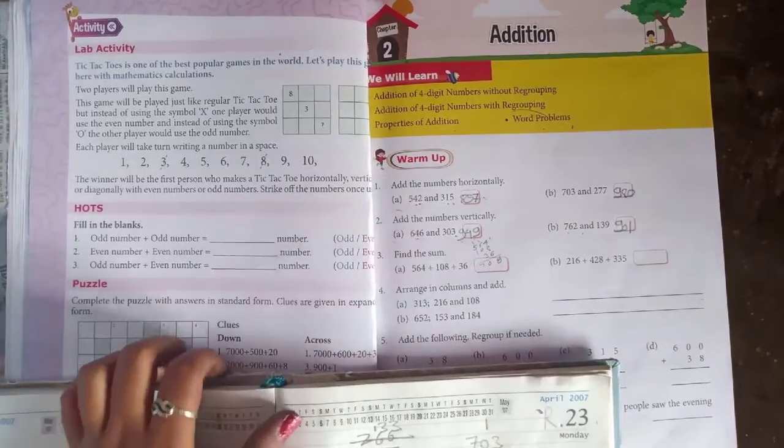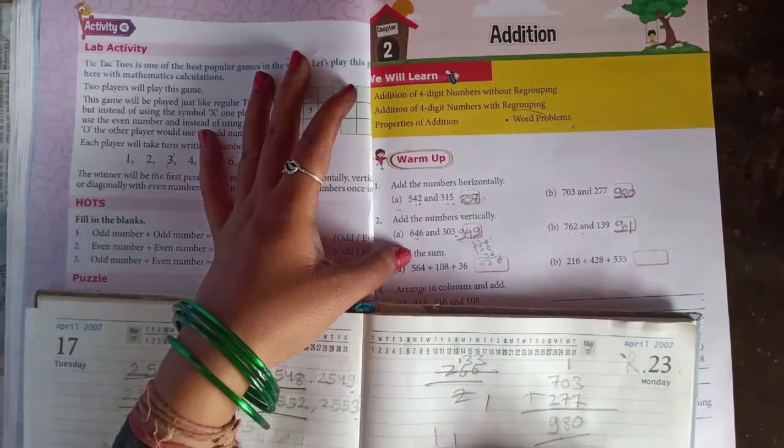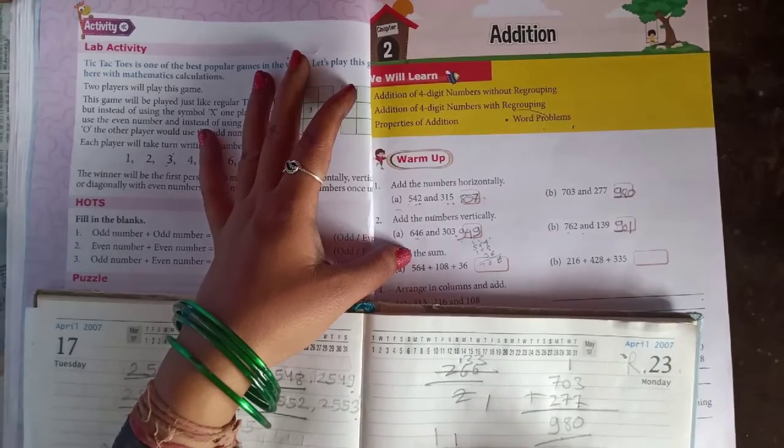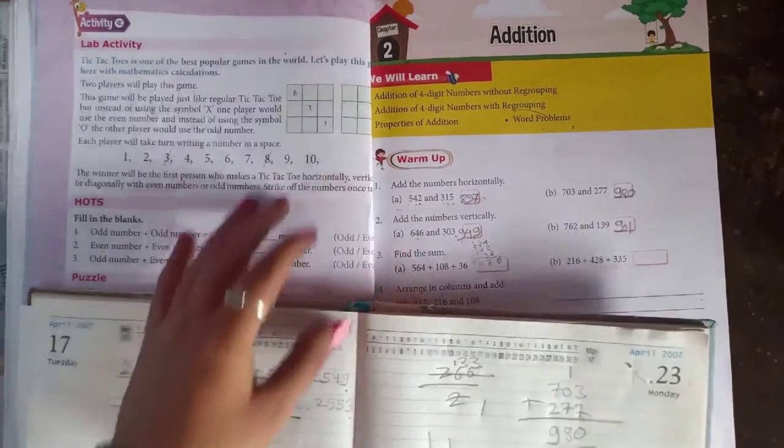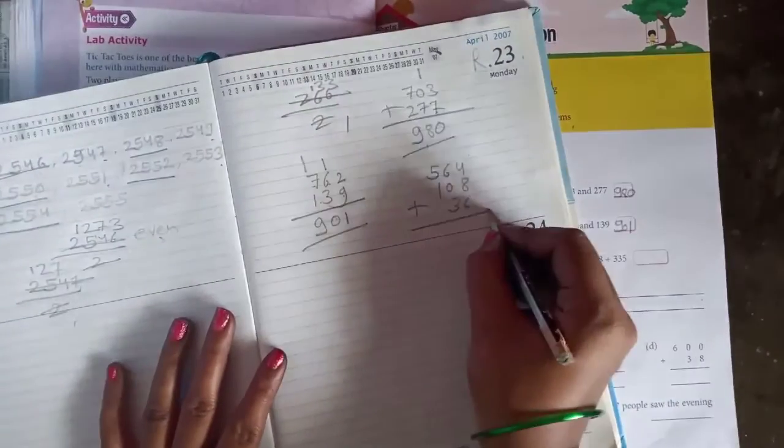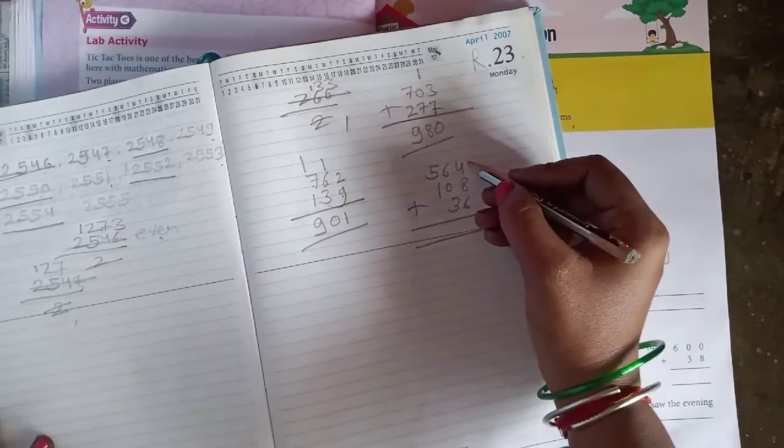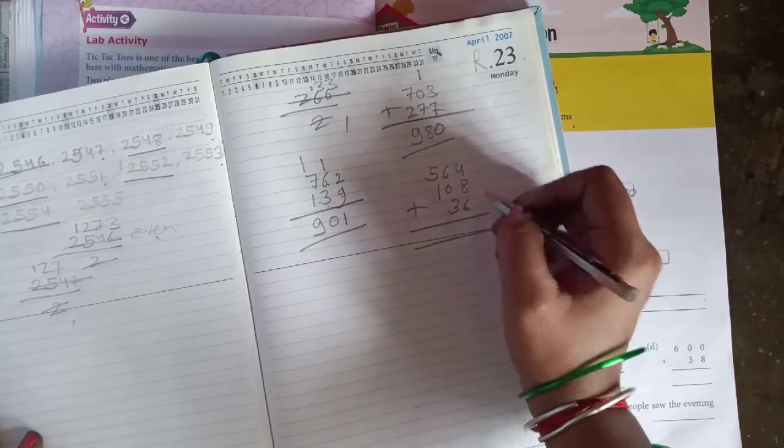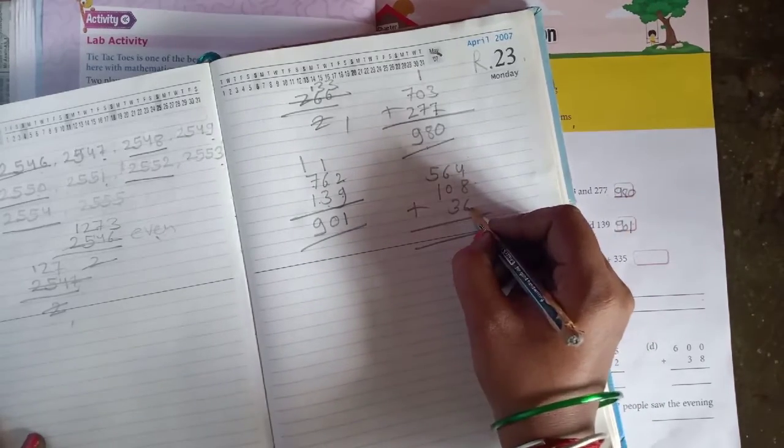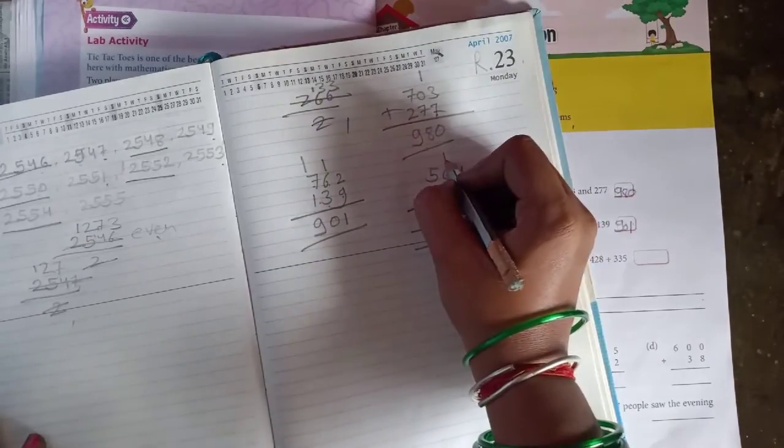So, find the sum: 564 plus 108 plus 36. The rule is always do it by right side. So in the right side number there is 4 plus 8 is 12, 12 plus 6 is 18, so 8 is here and 1 is here.